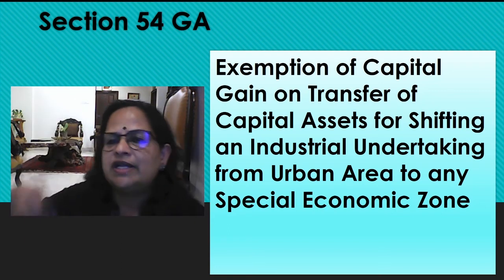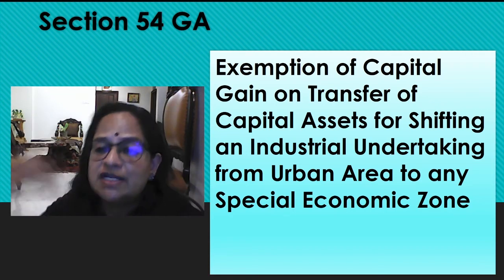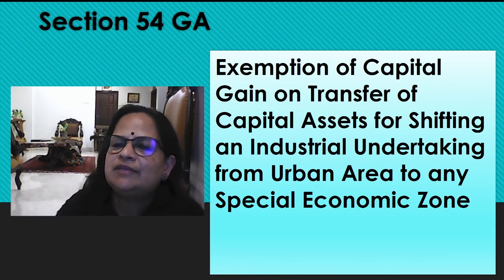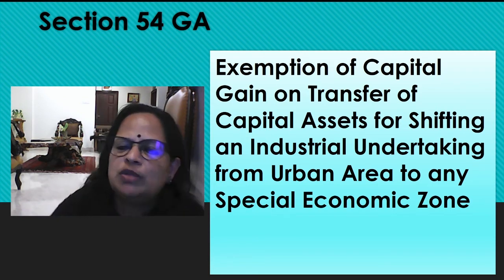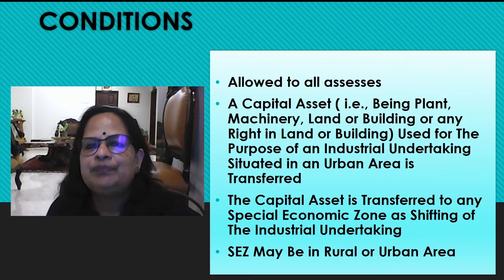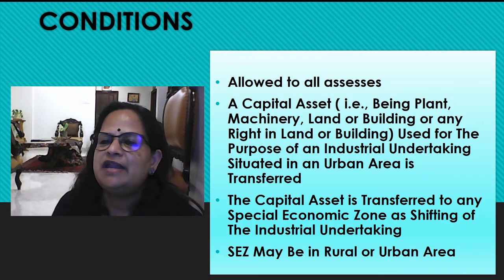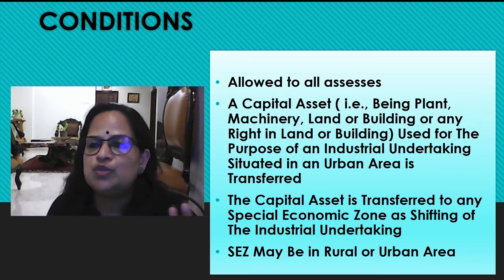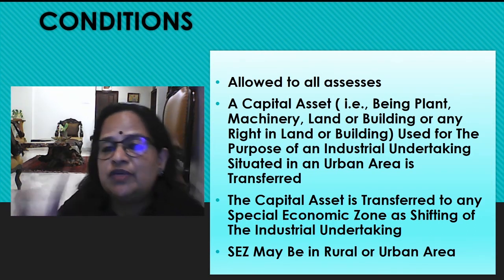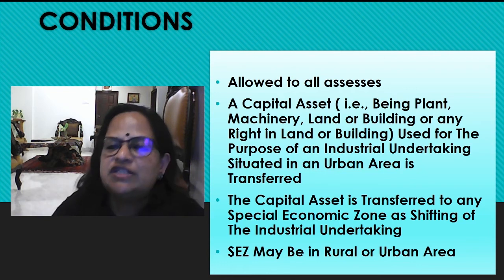If an SSC already has an industrial undertaking, when government starts a special economic zone, they can re-establish to that special economic zone. That is section 54GA. He has to transfer his capital asset from the existing place to the special economic zone. The capital asset allowed can be plant and machinery or land and building or any right in land and building — meaning if they are taking it on lease also it is possible — used for the purpose of an industrial undertaking situated in an urban area, transferred to a special economic zone.